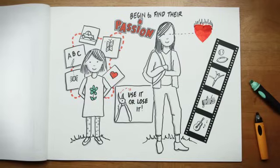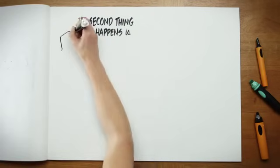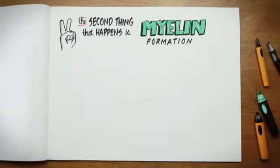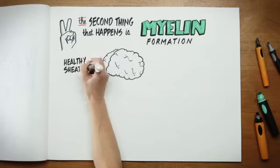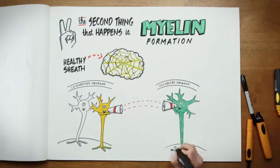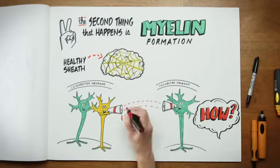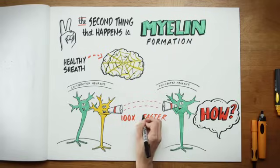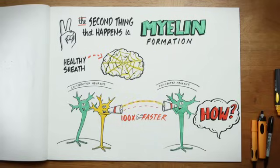The second thing that happens in the remodeling adolescent brain is myelin formation. Myelin is a healthy sheath that allows connected neurons to communicate with each other in a much more effective way. How? It's 100 times faster—the signal that's sent down a neuron to communicate with another neuron, 100 times faster.